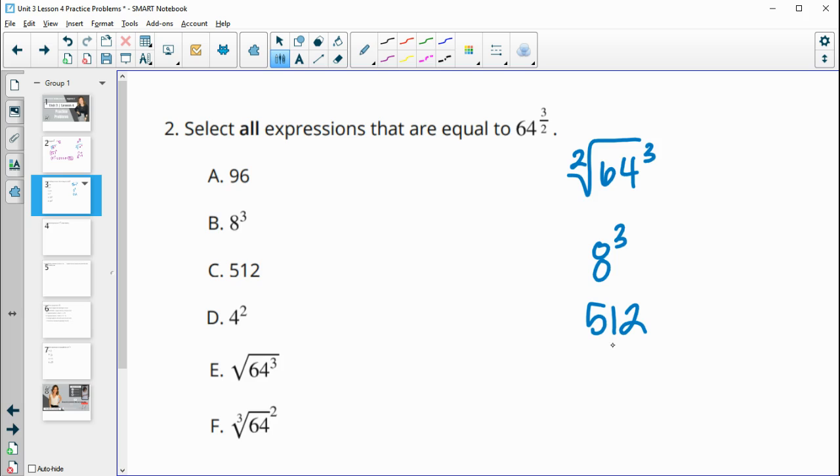So now we've got a few different things to look at as we're looking through all of these options. So it's not equal to 96 since it's equal to 512. We see eight to the third. It's certainly equal to that. It is also equal to 512.